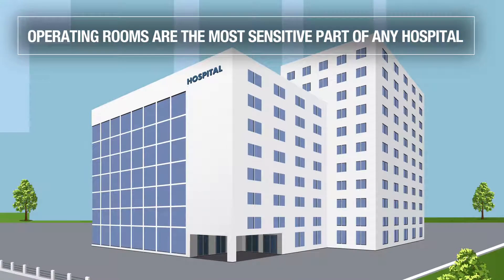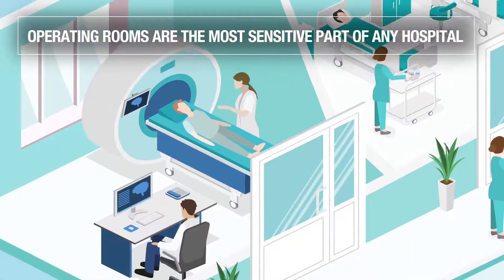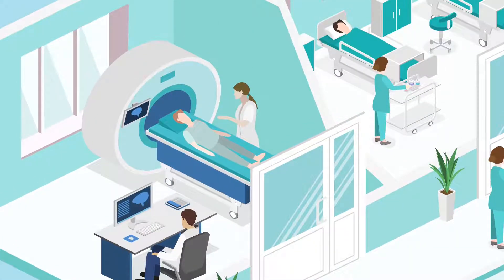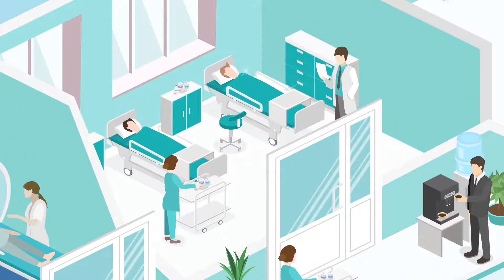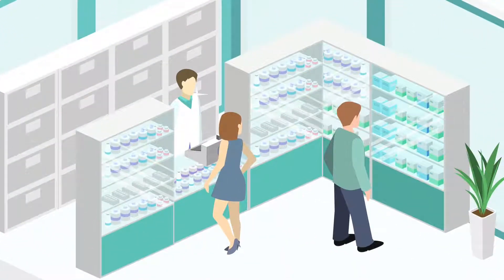Operating rooms are the most sensitive part of any hospital. Even though extreme care is taken to clean and sterilize this critical environment, the one area that is neglected is the operating room's air supply system.